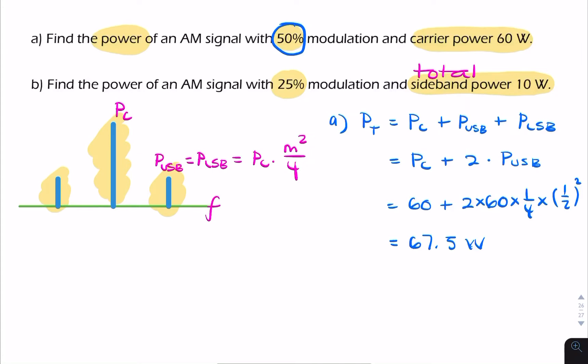Putting that into a calculator gives 67.5 watts. So the answer for part A is 67.5 watts — there are 60 watts in the carrier and only 7.5 watts in the two sidebands combined. This illustrates how wasteful AM is in terms of energy.